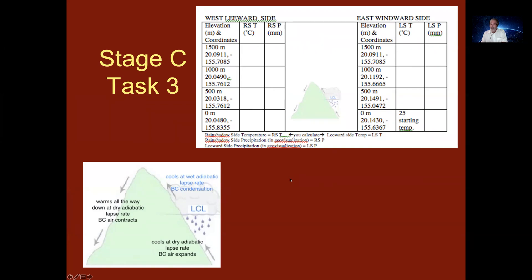And you're going to be looking at the temperature, the leeward side temperature (the LST), and the leeward side precipitation. You're going to be taking the air up the mountain to 1500 meters. And then you're going to be going back down the other side of the volcano close to sea level.